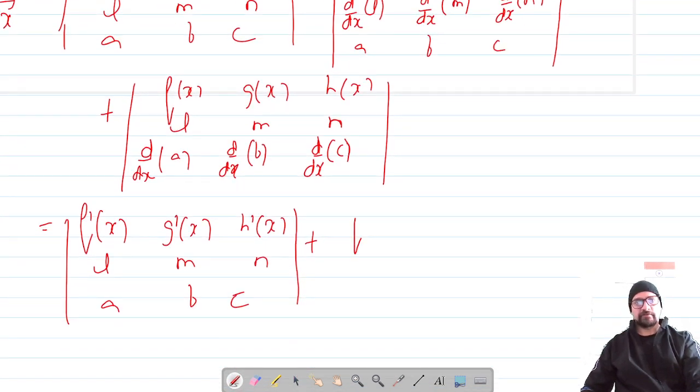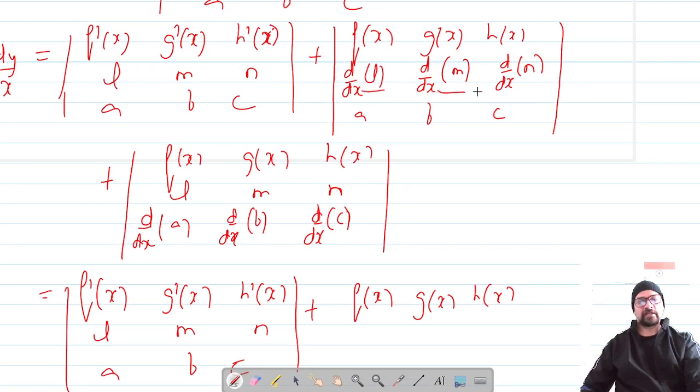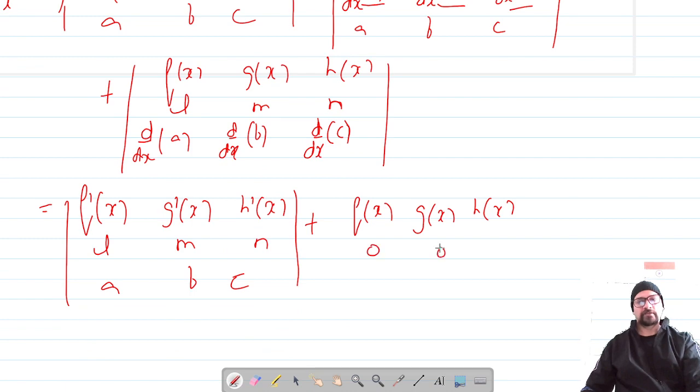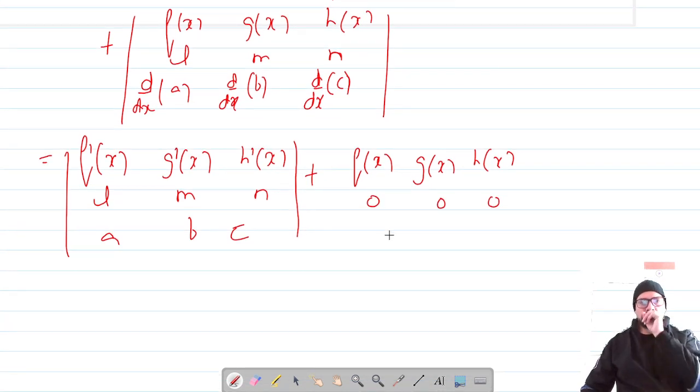For the second, it's f(x) g(x) h(x), and the differentiation of l m n is zero, so this is zero, and then the third row a b c.